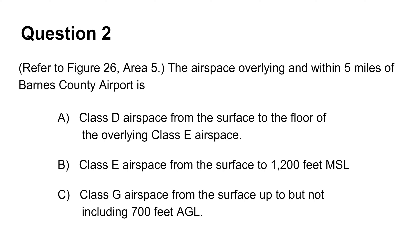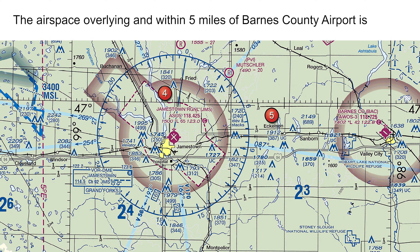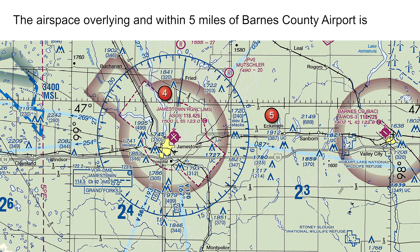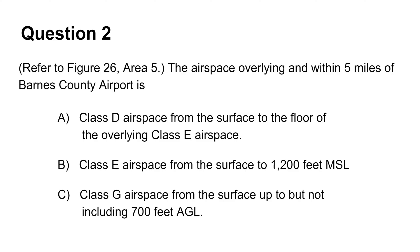The next question asks you to identify the airspace overlying within 5 miles of Barnes County Airport. The shaded magenta line surrounding Barnes County Airport represents Class E airspace. If you cannot remember what the shaded magenta line means, always refer to the legend in the Airman Knowledge Testing Supplement. This Class E airspace starts at 700 feet above ground level, meaning Class G is the only uncontrolled airspace overlying this airport from the surface up to but not including 700 feet AGL. Hence the answer is choice C.